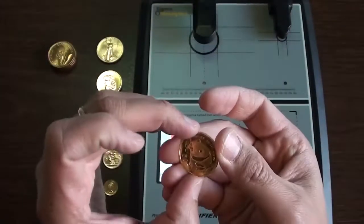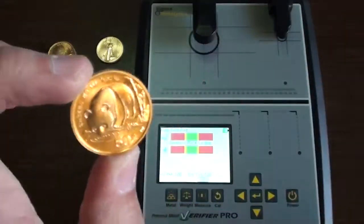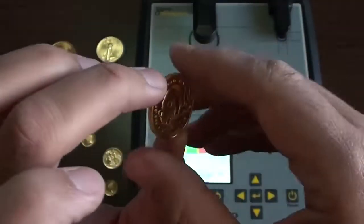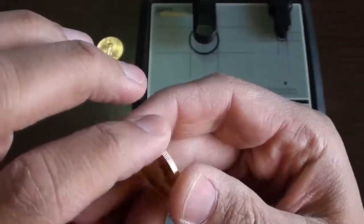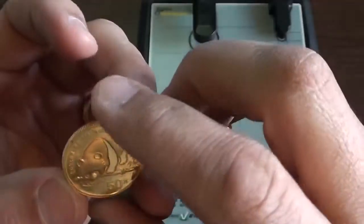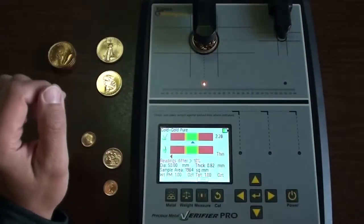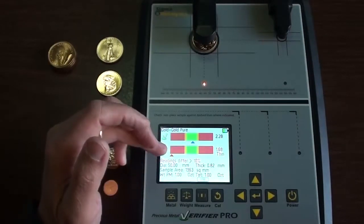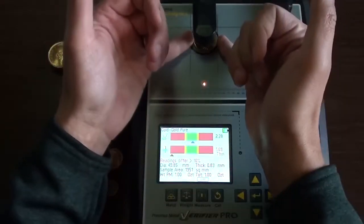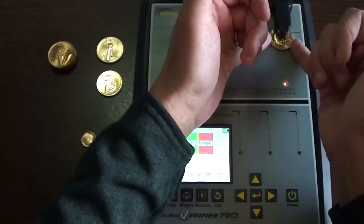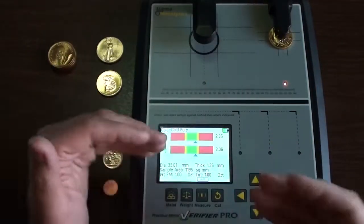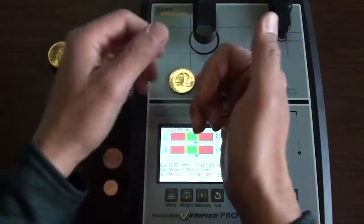Now here's a Panda. I'm not a real big fan of Chinese coins. But again, if I can pick something up at Melt, which I did on this particular coin, or at Spot, I'll jump all over it. So let's put that on there and see how it reads. It's saying it's a little thin. And that's because it can actually be read under this bridge over here and should give a solid reading right there in the green.